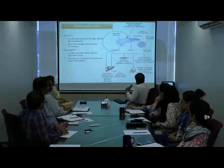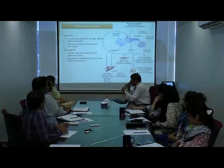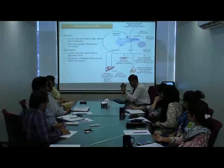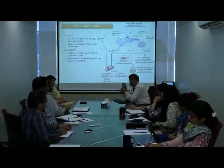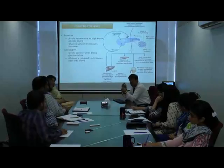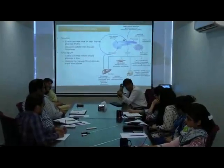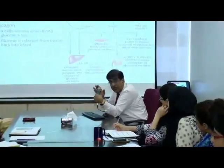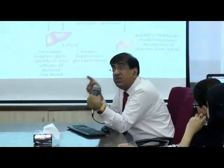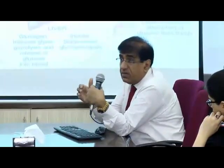A new latest drug group is now available known as SGLT2 inhibitors — sodium-dependent glucose transport inhibitors. It inhibits the enzyme SGLT2, which is present in the proximal tubule of the kidney. They reabsorb 90% of glucose back into circulation; the rest 10% is reabsorbed by the SGLT1 enzyme. There is no drug available for SGLT1, but 90% is blocked by SGLT2 inhibitors. I will show three or four slides about SGLT2.